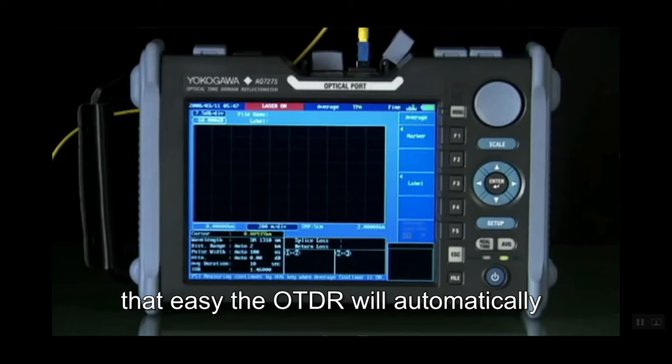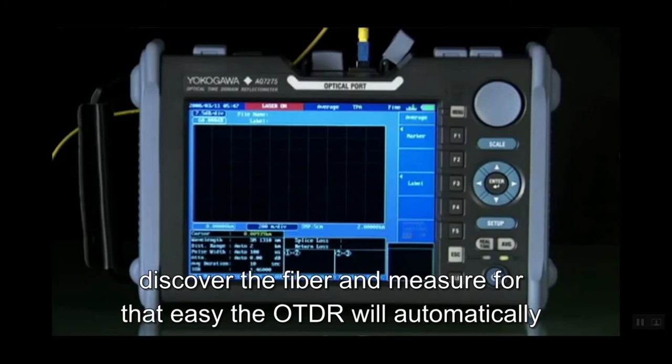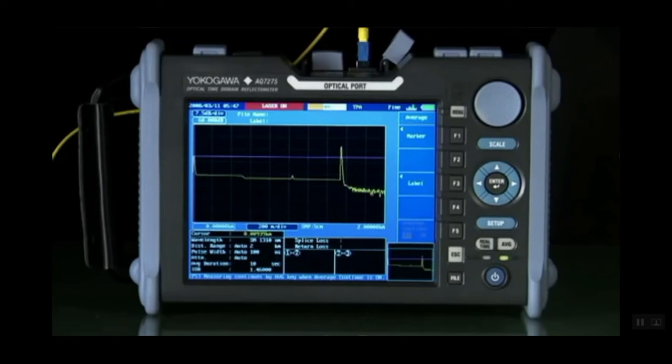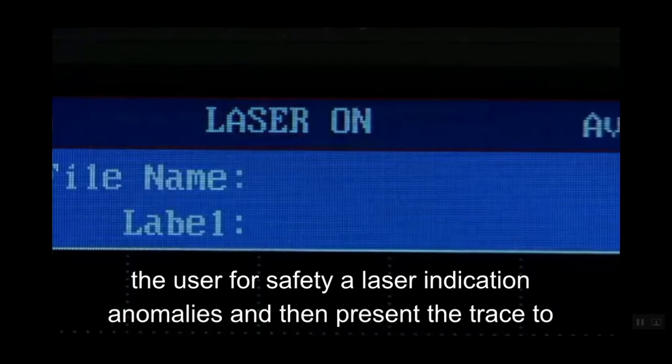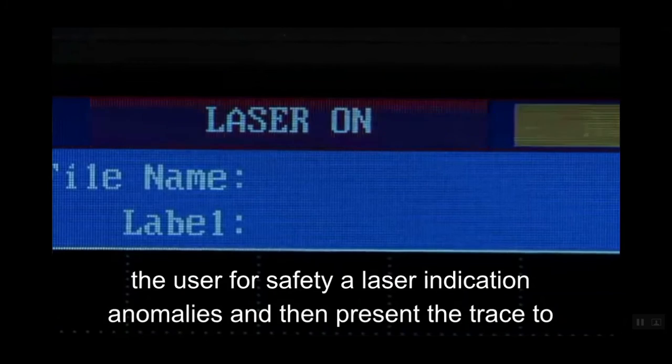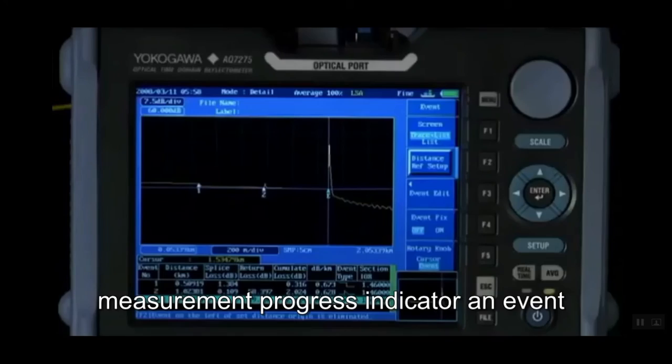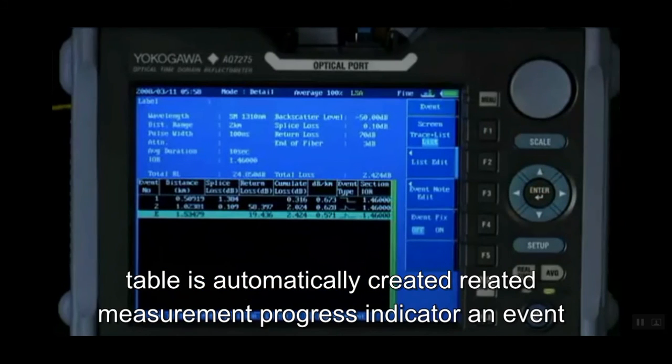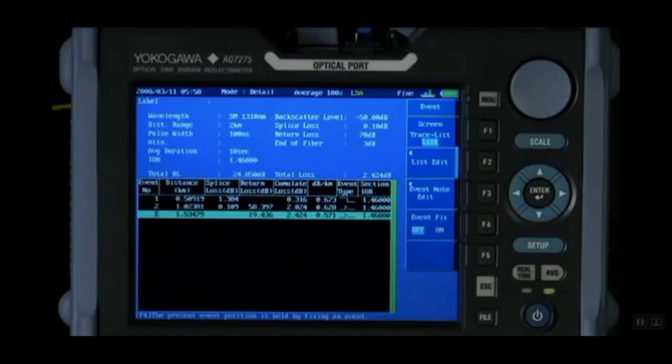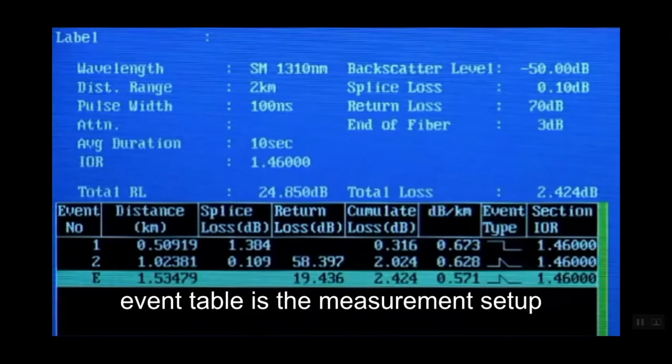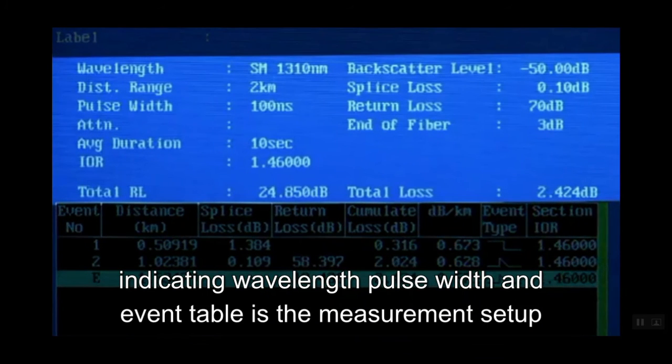It's that easy. The OTDR will automatically discover the fiber and measure for anomalies, then present the trace to the user. For safety, a laser indication is exhibited as well as the test measurement progress indicator. An event table is automatically created related to the trace just taken, along with the measurement setup indicating wavelength, pulse width, and other key conditions.